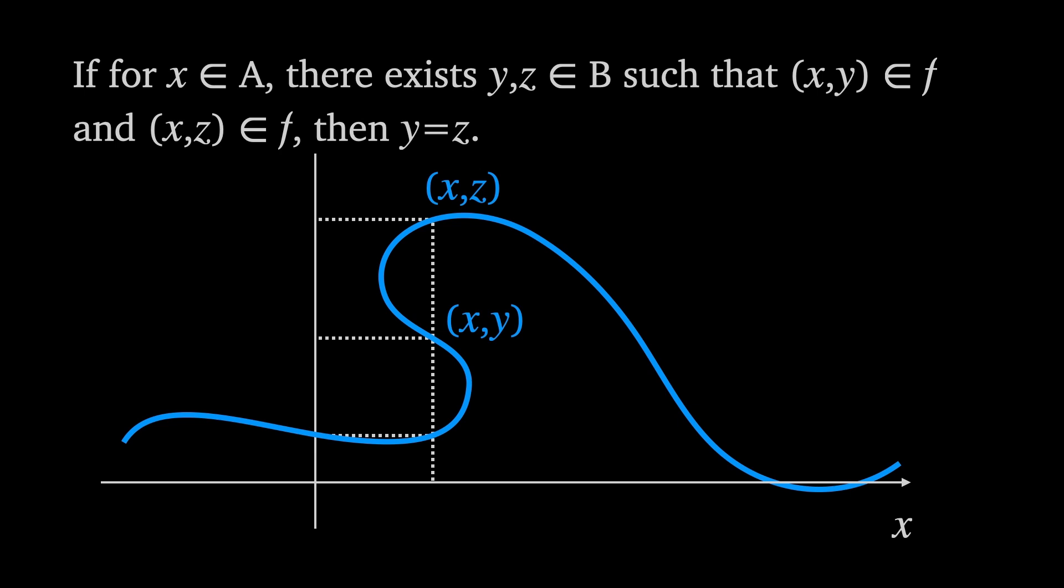This is saying that such a case like this where we clearly have two distinct values y and z being the output of our function at x would not be allowed under our definition of a function and hence the curve shown here doesn't represent a function strictly speaking.